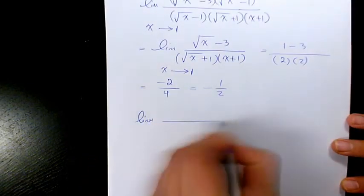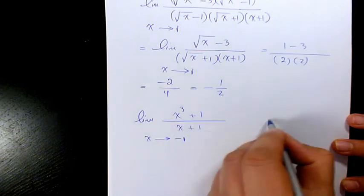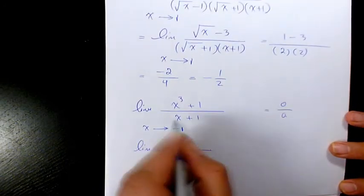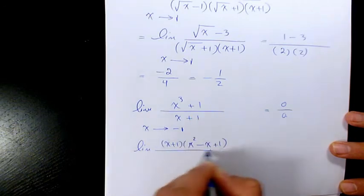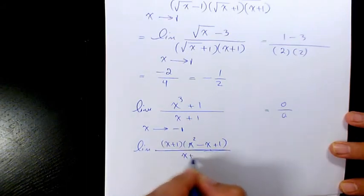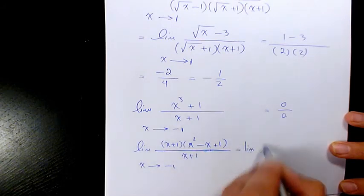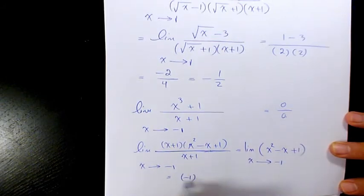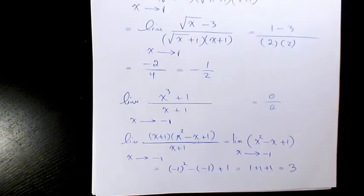Next example: the limit of (x cubed plus 1) over (x plus 1) when x is approaching negative 1. Substituting gives 0 over 0. Factoring the numerator gives (x plus 1)(x squared minus x plus 1). Canceling (x plus 1) gives the limit of (x squared minus x plus 1) as x approaches negative 1, which is 1 plus 1 plus 1, equal to positive 3.